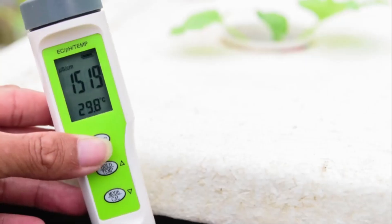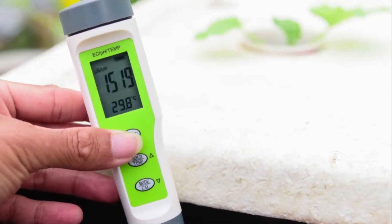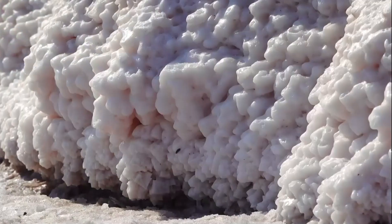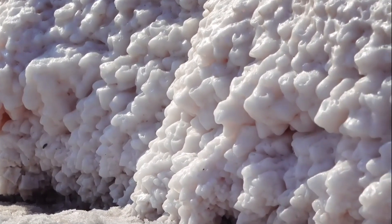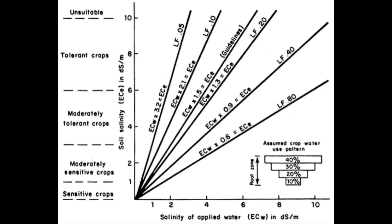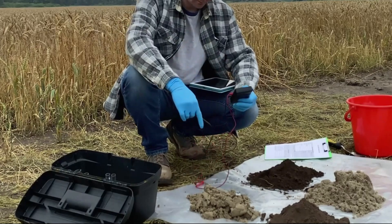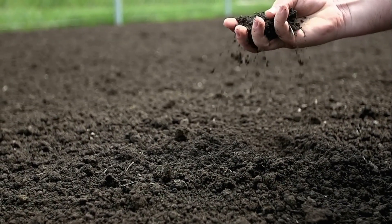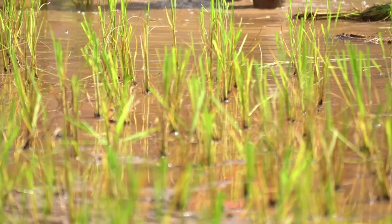High groundwater levels within 1.8 meters of the soil surface can cause soluble salts to enter the root zone due to the upward movement of water, and this phenomenon increases as soil texture becomes finer. The estimated capillary rise of water above ground level is: very coarse sand 2.0 cm, coarse sand 4.1 cm, medium sand 8.1 cm, fine sand 17.3 cm, very fine sand 40.6 cm, silt 101.6 cm, clay greater than 101.6 cm.